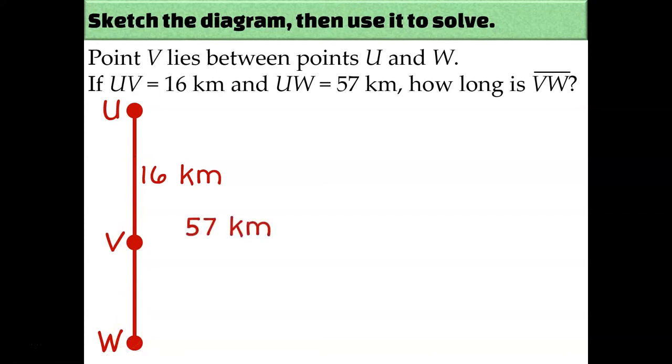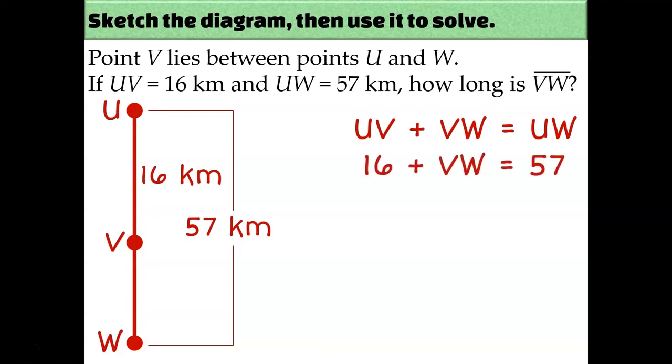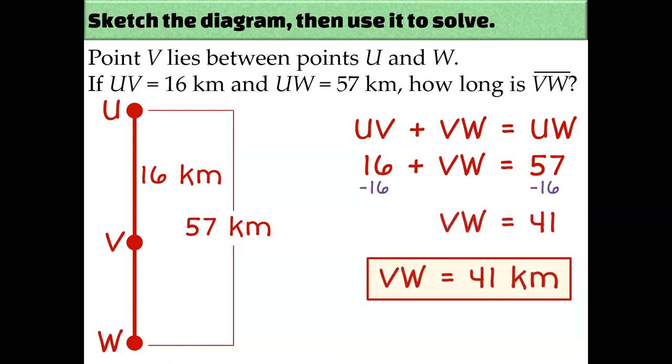Anytime you're labeling a segment that's made up of more than one segment, you're going to want to use a bracket to identify how far that 57 kilometers actually covers. So by putting a bracket from U to W, I can see by looking at this diagram that 57 is the length of UW. So let's calculate the missing length. For this segment, my segment addition postulate would be UV plus VW equals UW. Let's plug in what we know. UV is 16, VW is what I don't know, and UW is 57. So to solve, I would need to subtract 16 from both sides and figure out that VW is 41 kilometers.